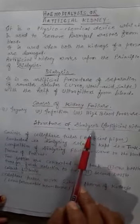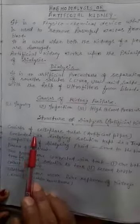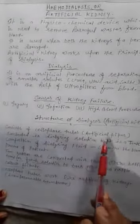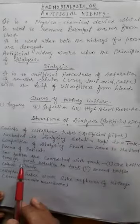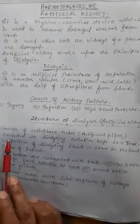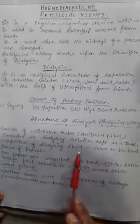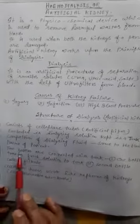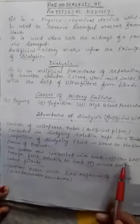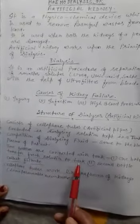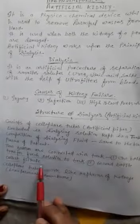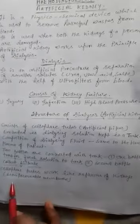The structure of the dialysis machine: the artificial kidney consists of cellophane tubes, which are artificial pipes made up of high quality plastic. These pipes are embedded in a dialysis solution kept in a tank. The composition of the solution is the same as the blood plasma of the patient. Two bottles are connected with this tank — one bottle transfers fresh solution to the tank, whereas another bottle collects the filtrate. Cellophane tubes work like nephrons of the kidney, which are semi-permeable membranes.